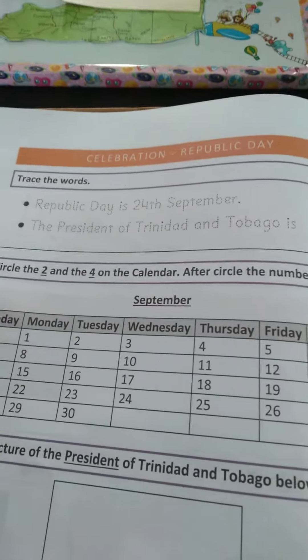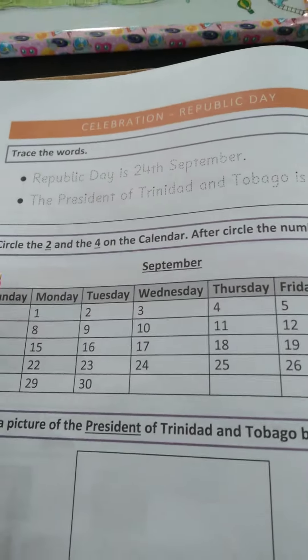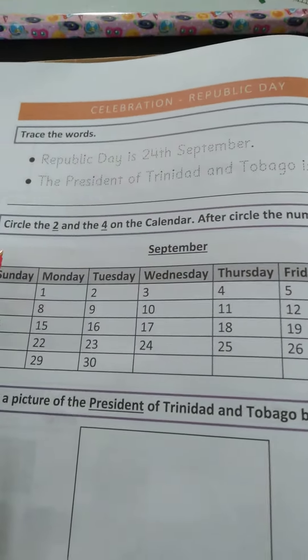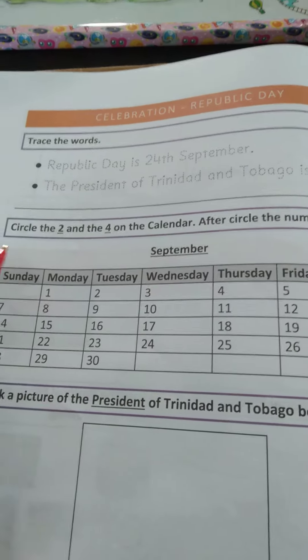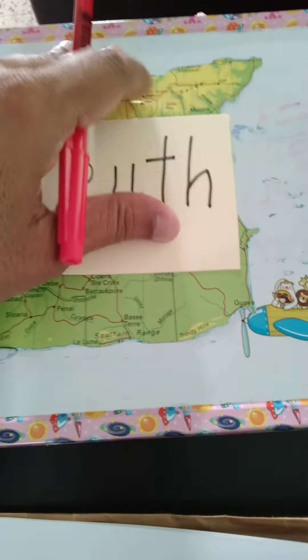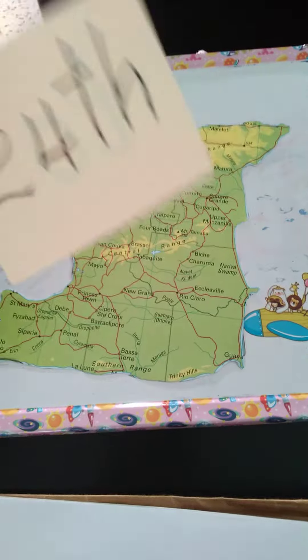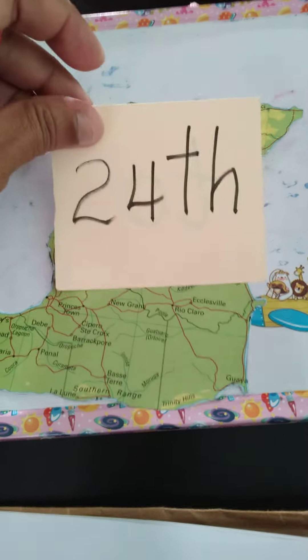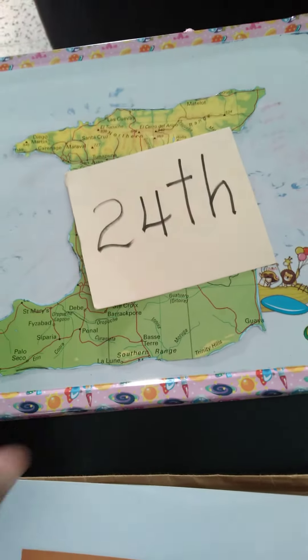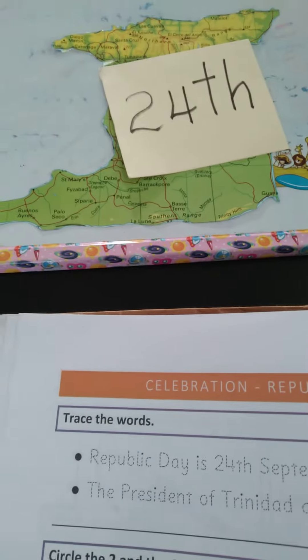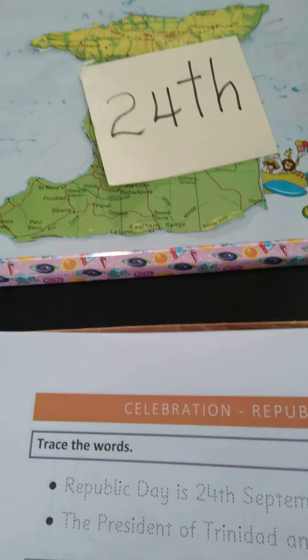Get mommy to talk to you about Republic Day. Remember, get the map of Trinidad and Tobago and write the 24th — stick it in the middle. And why the 24th? Because on the 24th of September, we will be celebrating.